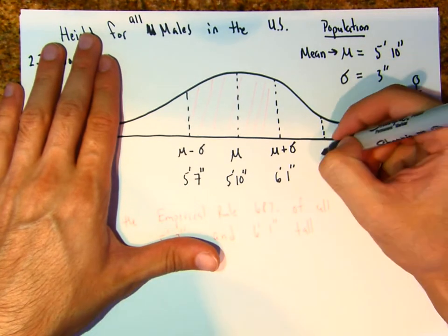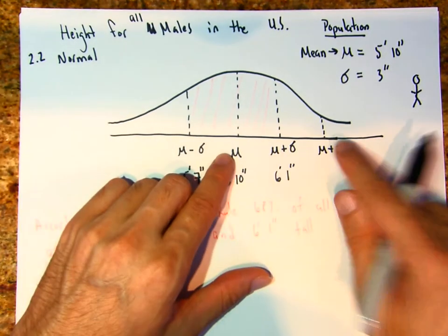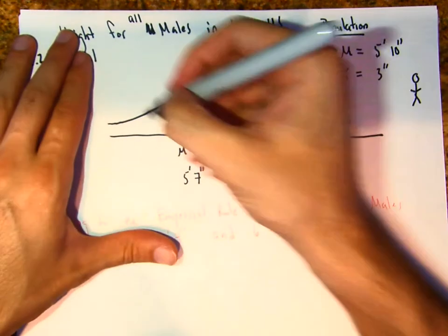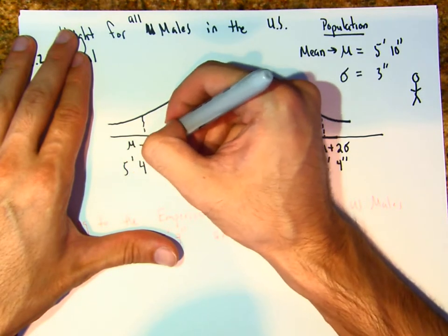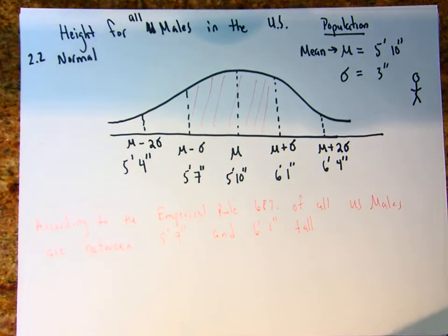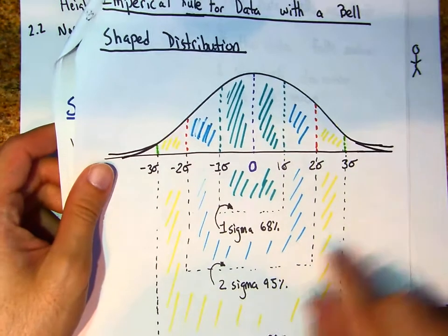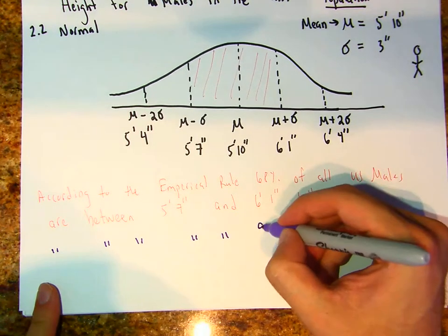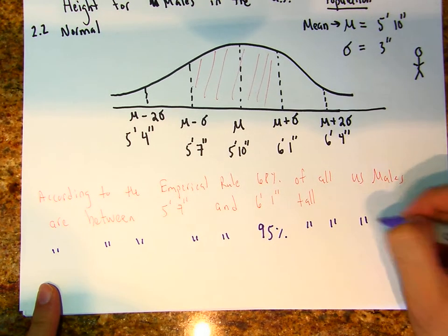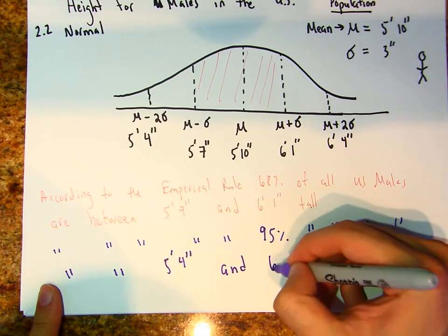What about two standard deviations? Going another standard deviation out: mu plus two sigma is five foot ten plus six inches, which is six foot four inches. And mu minus two sigma is five foot four inches. According to the empirical rule, 95% of all U.S. males are between five foot four inches and six foot four inches tall.